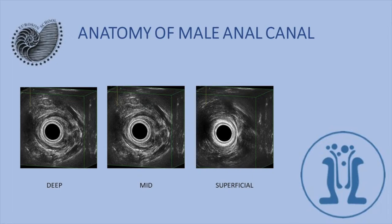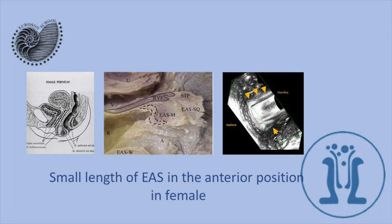I'd also like to draw attention to the internal anal sphincter. As seen in cadaveric specimens and on ultrasound, the external anal sphincter — which is the most important sphincter of the anus — is short in the anterior position in females. Moreover, there are obstetric damages to the anal sphincter in that area and we should be very cautious.